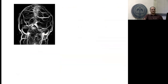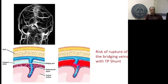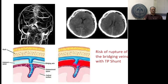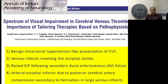Optic nerve sheath fenestration is preferred over TP shunt in these CVT cases with BIH-like presentation. Other causes of visual loss in CVT, which we have published from our department, include venous infarcts causing cortical occipital infarct, secondary dural arteriovenous fistula developing later, and in the acute setting, large venous infarcts causing pressure on the posterior cerebral artery leading to secondary arterial infarct and occipital visual loss.